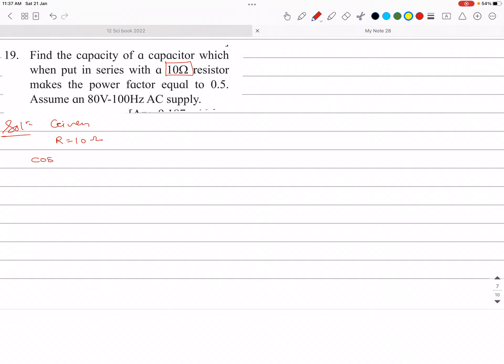Power factor means here they given cos phi is 0.5. Assume this is 80 volt and 100 hertz power supply. So E RMS they given and this is frequency.